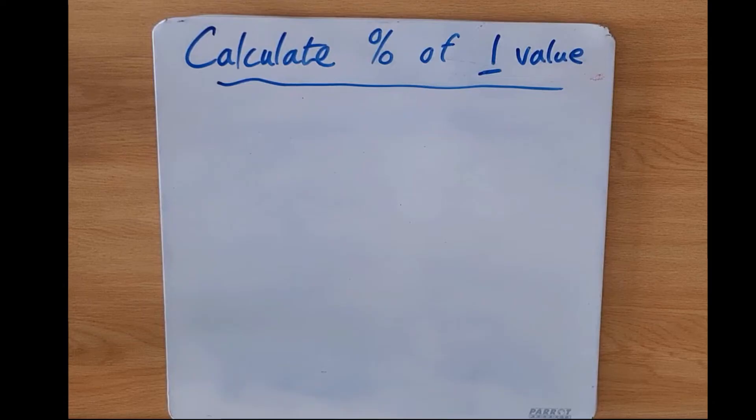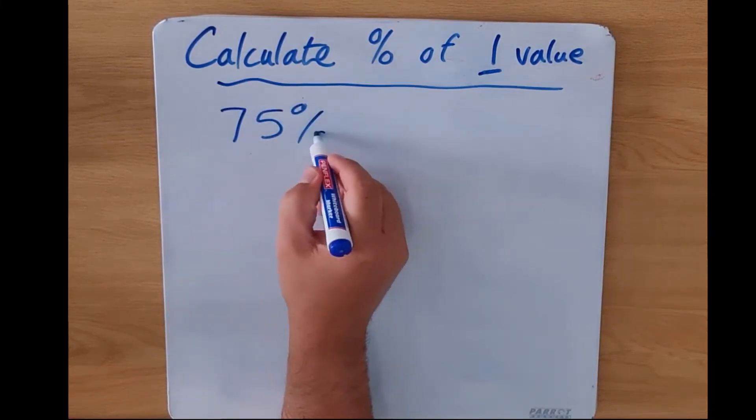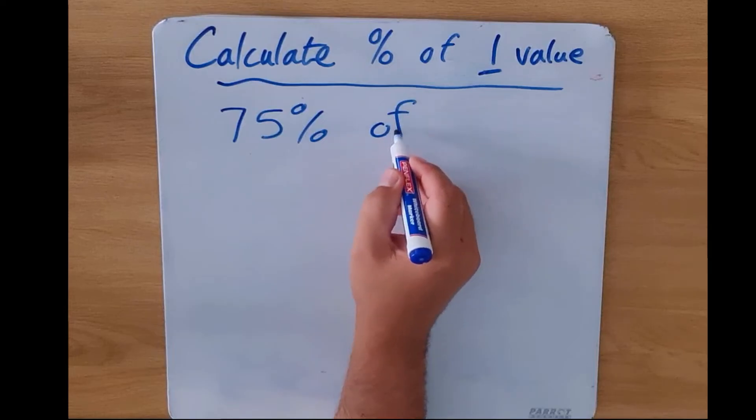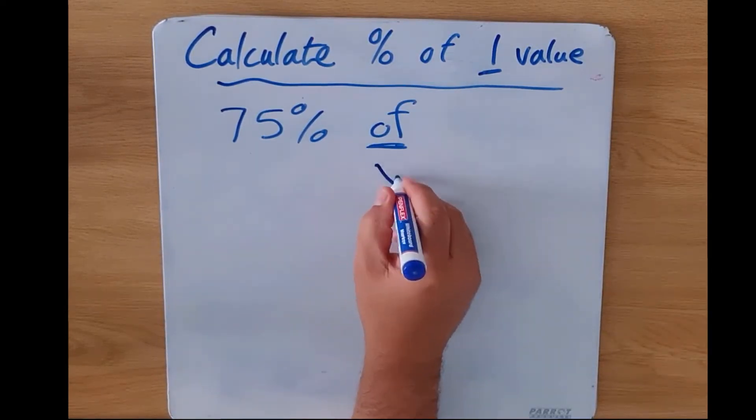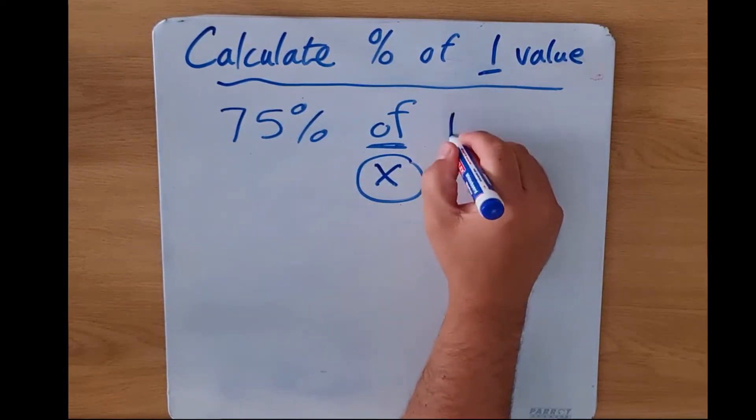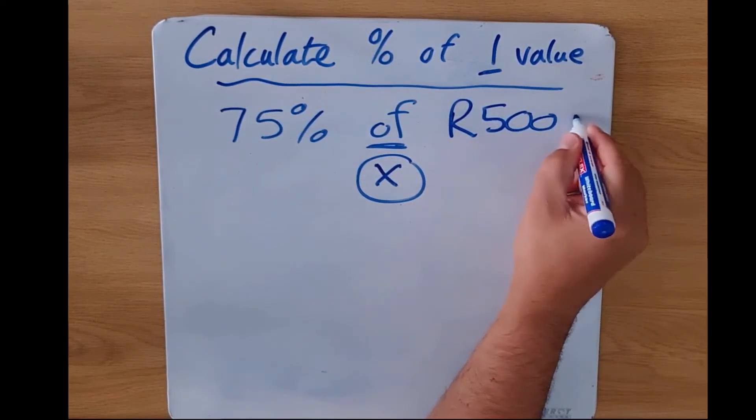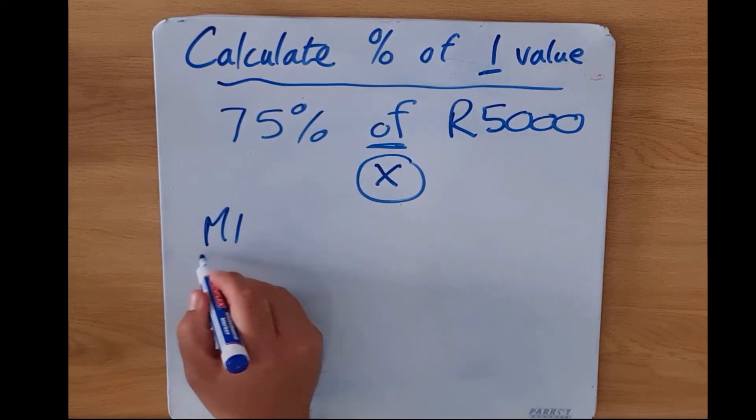So let's look at how we are going to calculate the percentage of one value. In a typical example, we want to calculate 75%, and they like to use this little word 'of' which tells us it's going to be multiplying, and then they tell us R5000. So on your calculator there are really three ways of doing this.